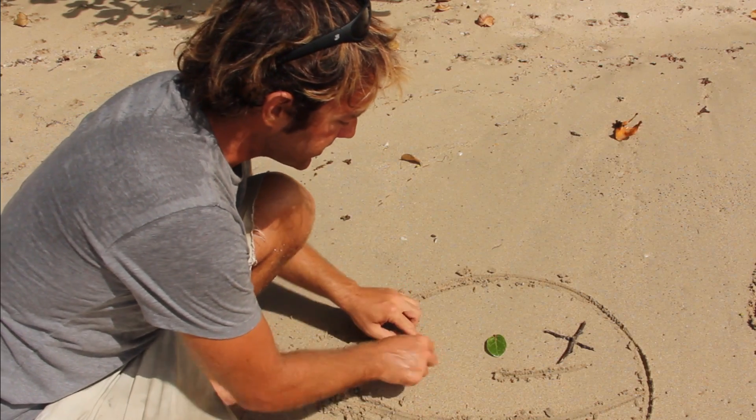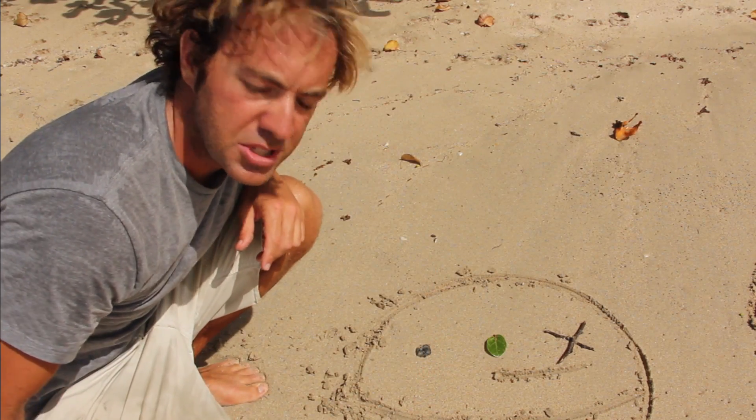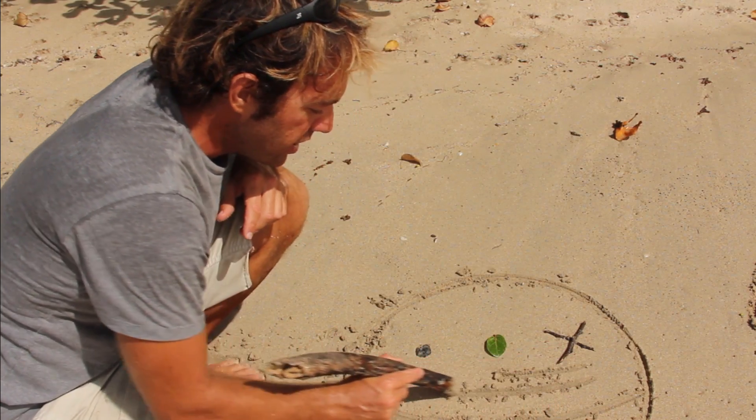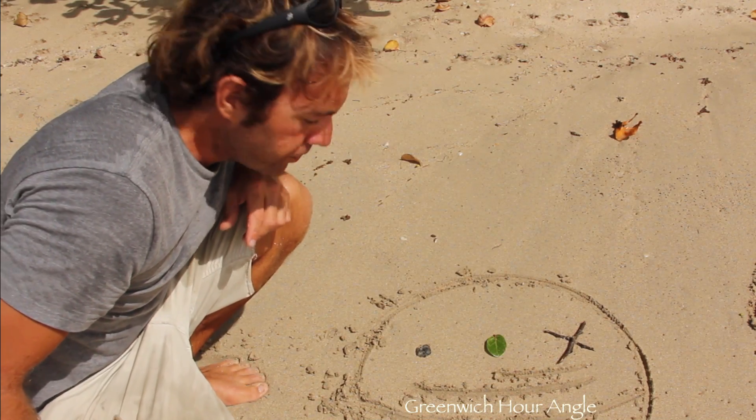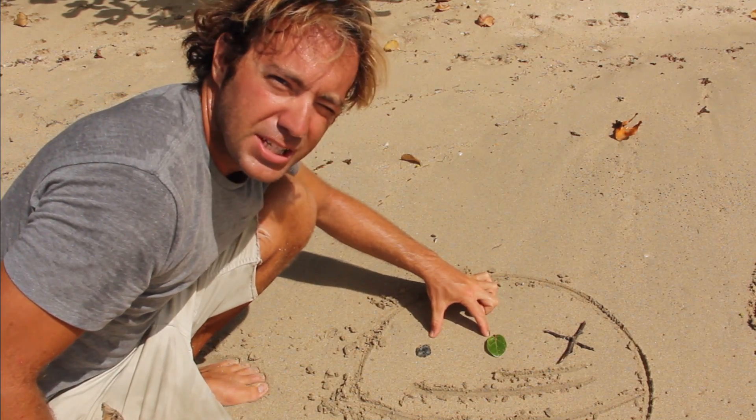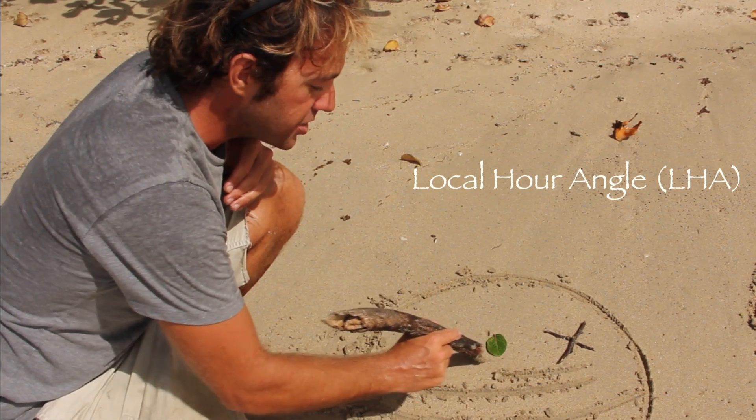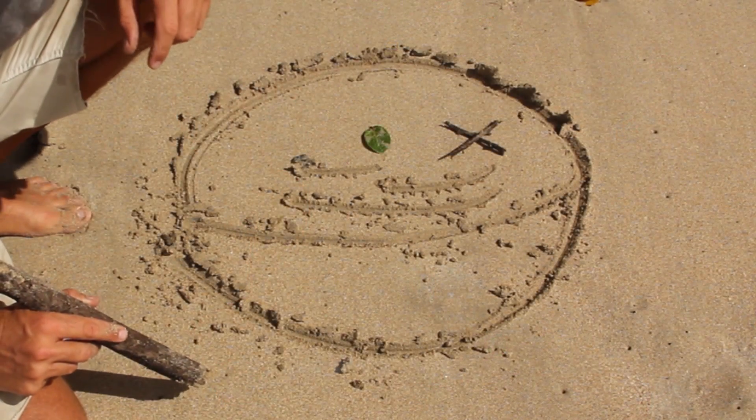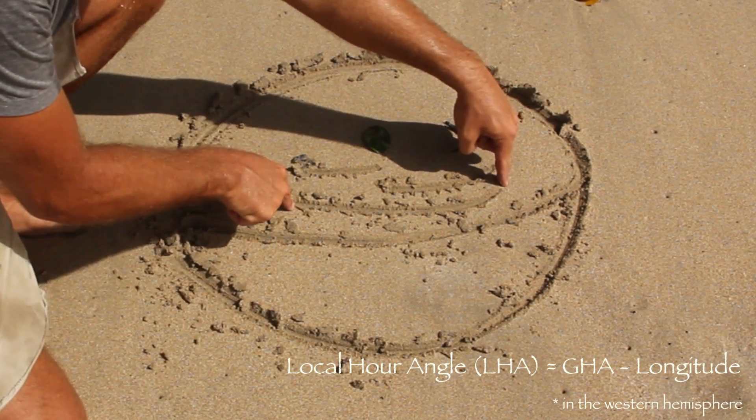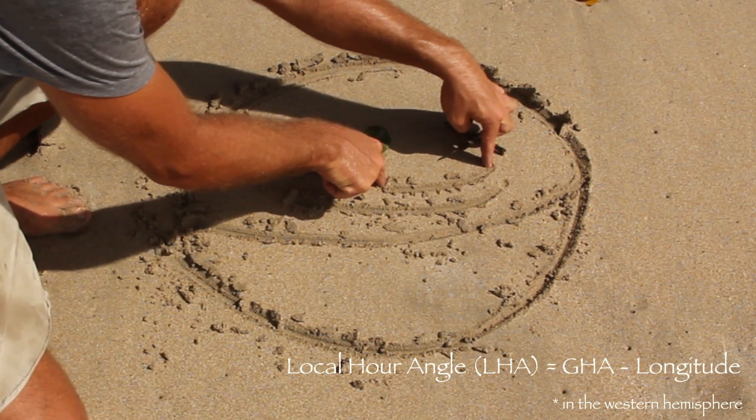Finally, we recently learned that a celestial body has a longitude as well. That longitude is called Greenwich hour angle. What's left here is local hour angle. The angle between us and the celestial body is called local hour angle. And in the Western Hemisphere, it's simply Greenwich hour angle minus longitude.